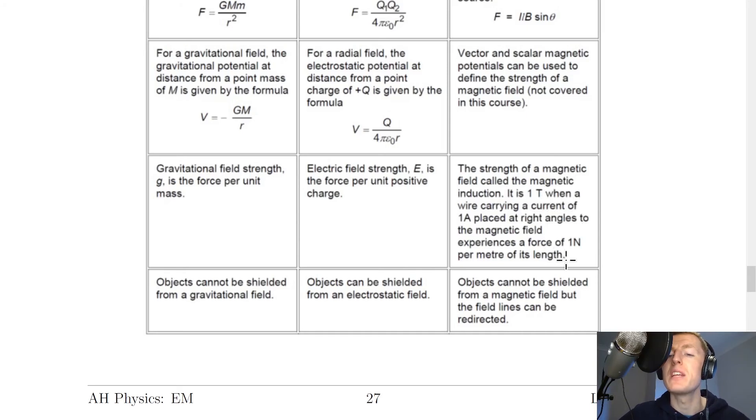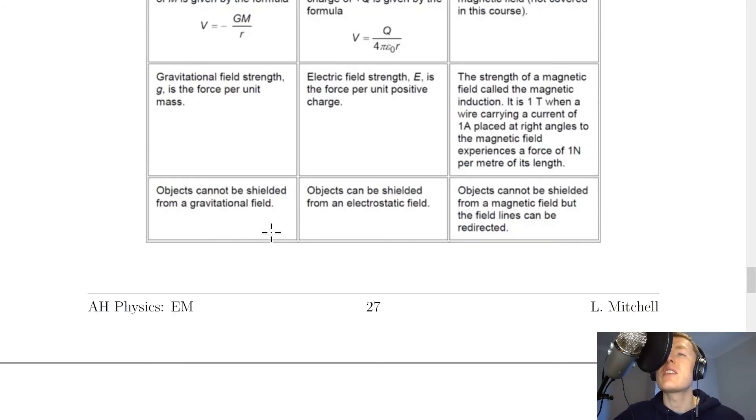And lastly objects cannot be shielded from a gravitational field, it permeates all space. Objects can be shielded from an electrostatic field such as in electrostatic shielding of wires. And objects cannot be shielded from a magnetic field but the field lines can be redirected.